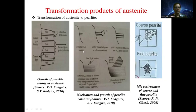Initially there will be the formation of Fe3C nuclei. Then Fe3C plates grow, alpha ferrite is nucleated, and further new plates of ferrite and cementite are produced, forming the pearlite colonies. This nucleation and growth of pearlite colonies is called pearlite.